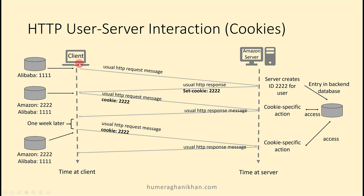Now this client wants to visit amazon.com server website and it is sending a usual HTTP request message. When this message reaches the server, the first thing the server does is create an ID 2222 for this user and create an entry in its database. The server then creates a response message, and in that response message it specifies the cookie created for this specific client, setting the cookie and sending this response message to the client.